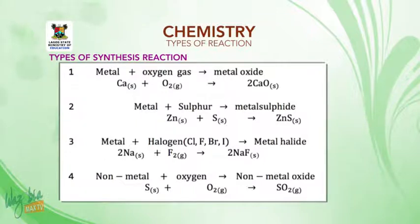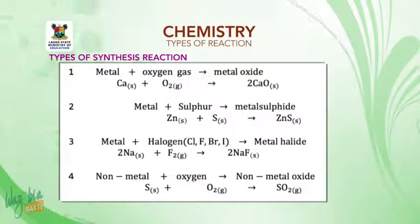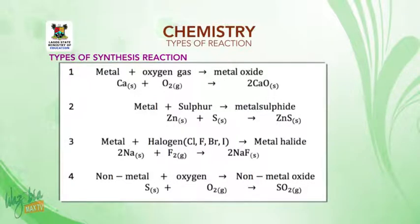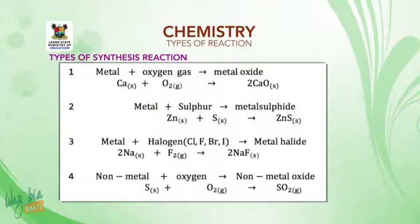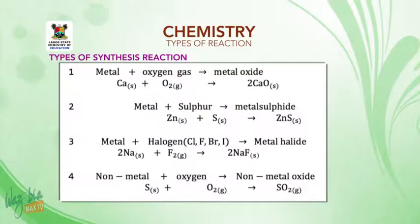Another type: metal plus halogen — which could be chlorine, fluorine, bromine, or iodine — gives metal halides. For example, sodium plus fluoride. The last one: non-metal reacting with oxygen gas gives non-metal oxide. For example, sulfur plus oxygen gives sulfur dioxide (SO₂) gas.